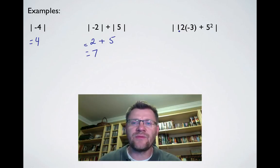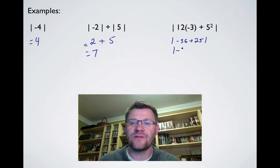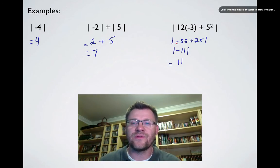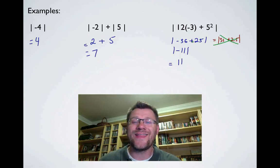For this last example: the absolute value of 12 times negative 3 plus 5 squared. You don't take the absolute value until you have a single number inside the bars. So we get negative 36 plus 25, which equals negative 11. The absolute value of negative 11 is positive 11. Some people feel compelled to take the absolute value of negative 36 separately and say it's positive 36 plus 25 — but that is wrong. You must evaluate the expression to a single number first, then take the absolute value.